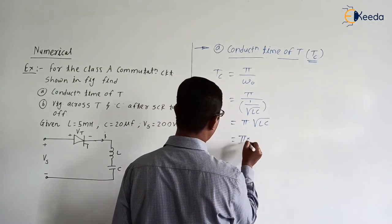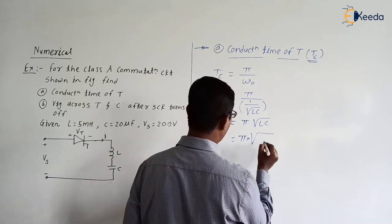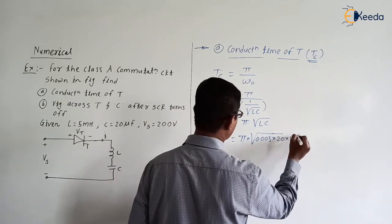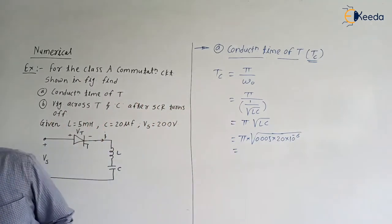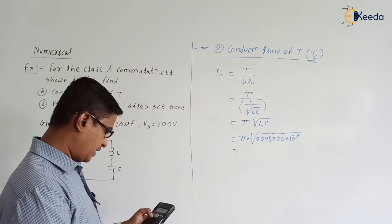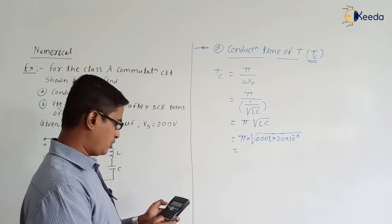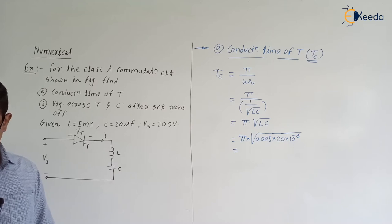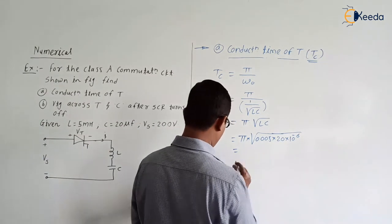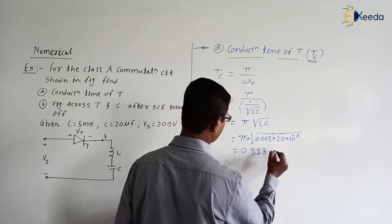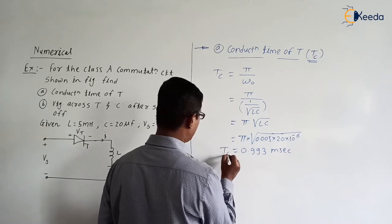Substituting the values: Tc = π × √(L × C) = π × √(0.005 × 20 × 10⁻⁶). That gives √(0.005 × 20 × 10⁻⁶) into π = 9.93 × 10⁻⁴, which is 993.45 microseconds, or approximately 0.993 milliseconds. This is the conduction time of thyristor Tc.